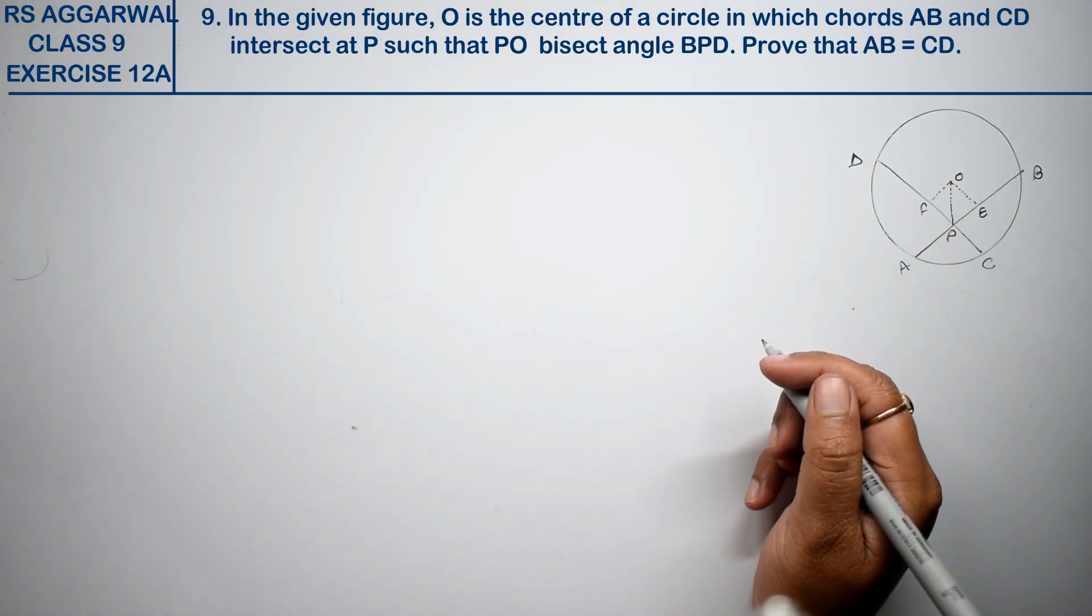Let's do question number 9 of exercise 12A, that is circles. Question number 9 is: In the given figure, O is the center of a circle in which chords AB and CD intersect at P.